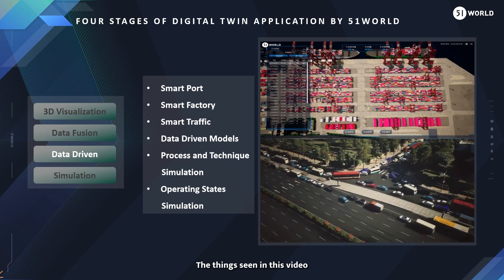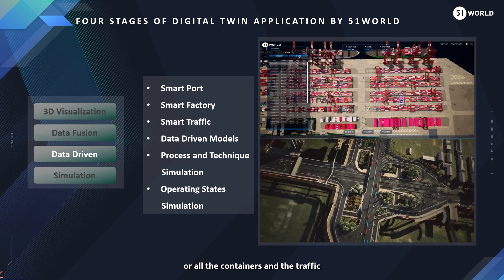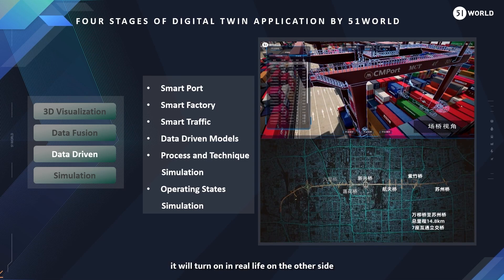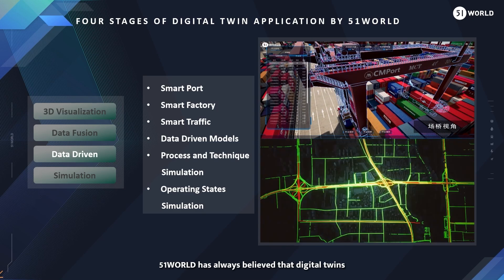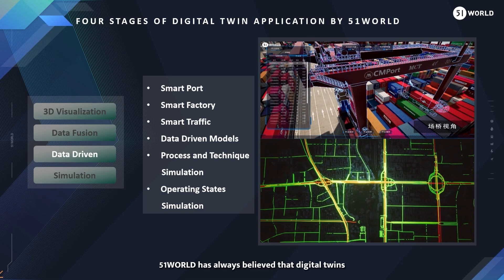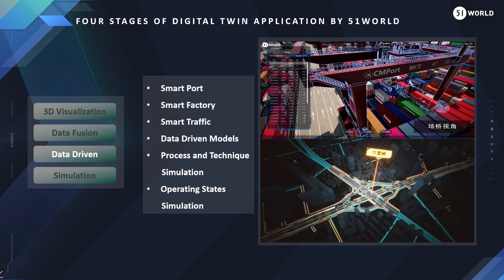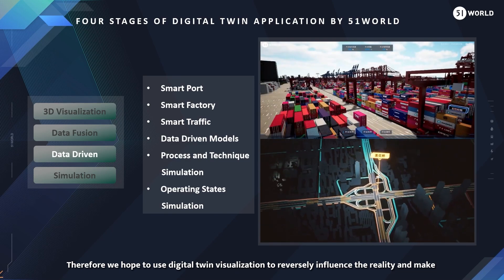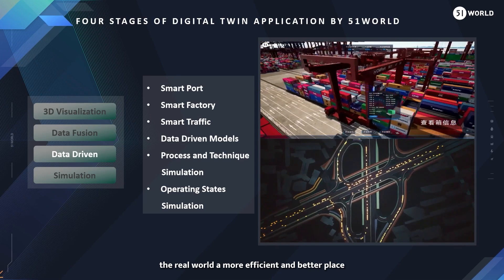The things seen in this video — such as the beam bridge, gantry crane, all the containers, and the traffic — are all real-time, just like playing a game. As long as you turn it on here, it will turn on in real life on the other side. 51World has always believed that digital twins, and even the metaverse, are based on reality and higher than reality. Therefore, we hope to use digital twin visualization to reversely influence reality and make the real world a more efficient and better place.